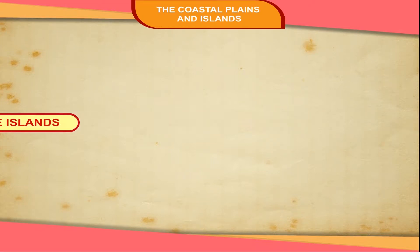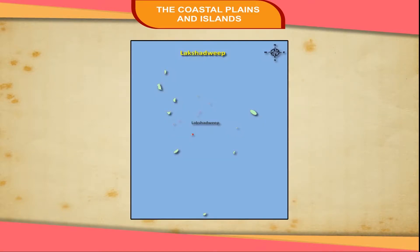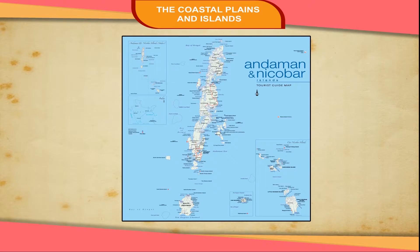There are two groups of islands away from the coast of India. They are Andaman and Nicobar Islands and Lakshadweep. These two islands are union territories of India.